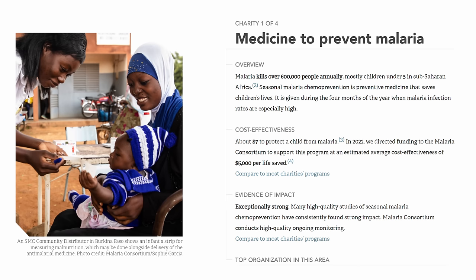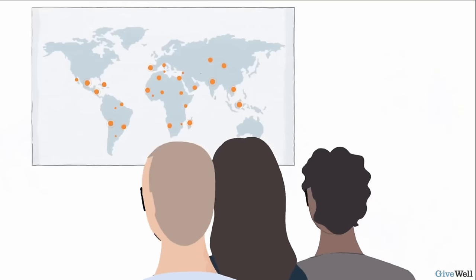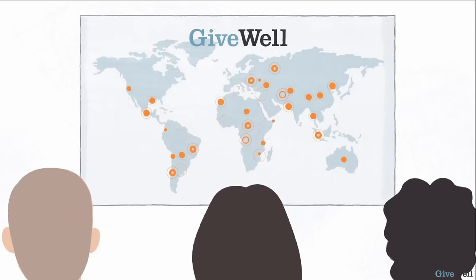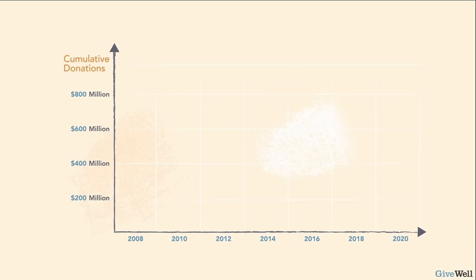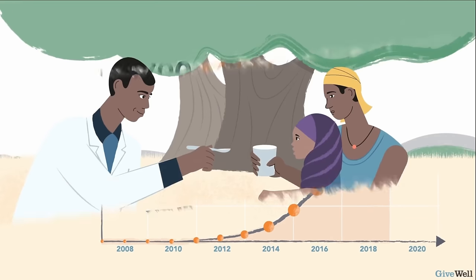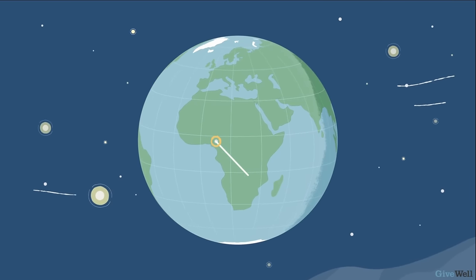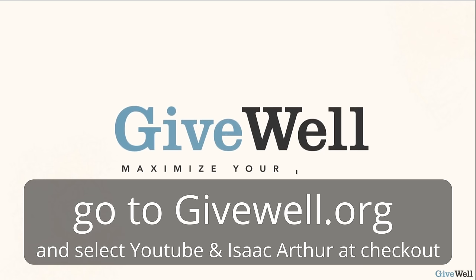GiveWell has now spent over 15 years researching charitable organizations and only directs funding to a few of the highest impact opportunities they've found. Over 100,000 donors have used GiveWell to donate more than $1 billion. Rigorous evidence suggests that these donations will save over 150,000 lives and improve the lives of millions more. If you've never donated to GiveWell's recommended charities before, you can have your donation matched up to $100 before the end of the year or as long as matching funds last. To claim your match, go to GiveWell.org and pick YouTube and enter Isaac Arthur at checkout. Make sure they know that you heard about GiveWell from Science and Futurism with Isaac Arthur to get your donation matched. Again, that's GiveWell.org to donate or find out more.